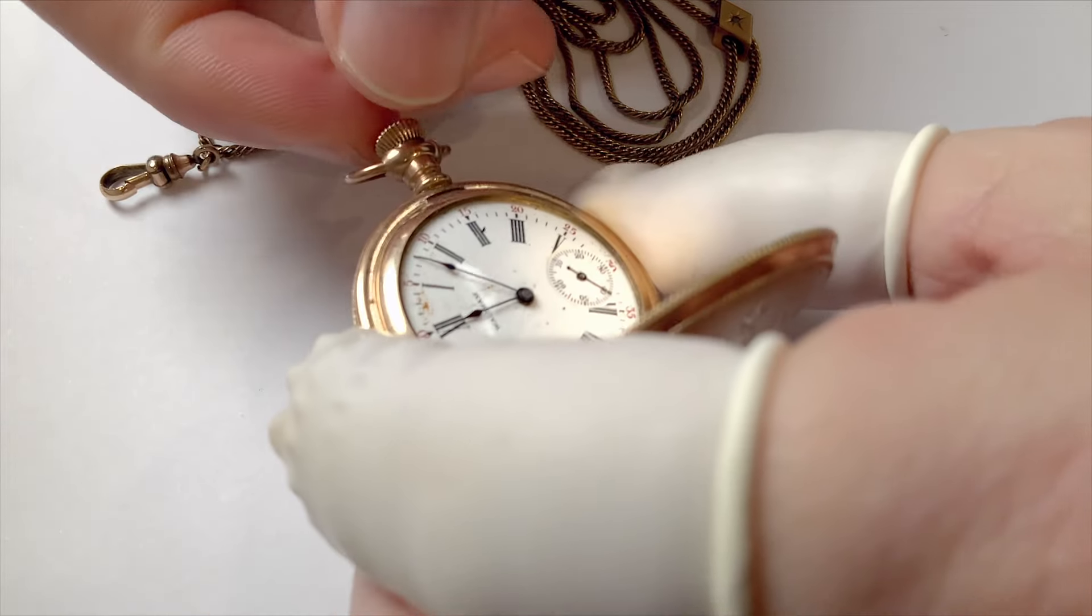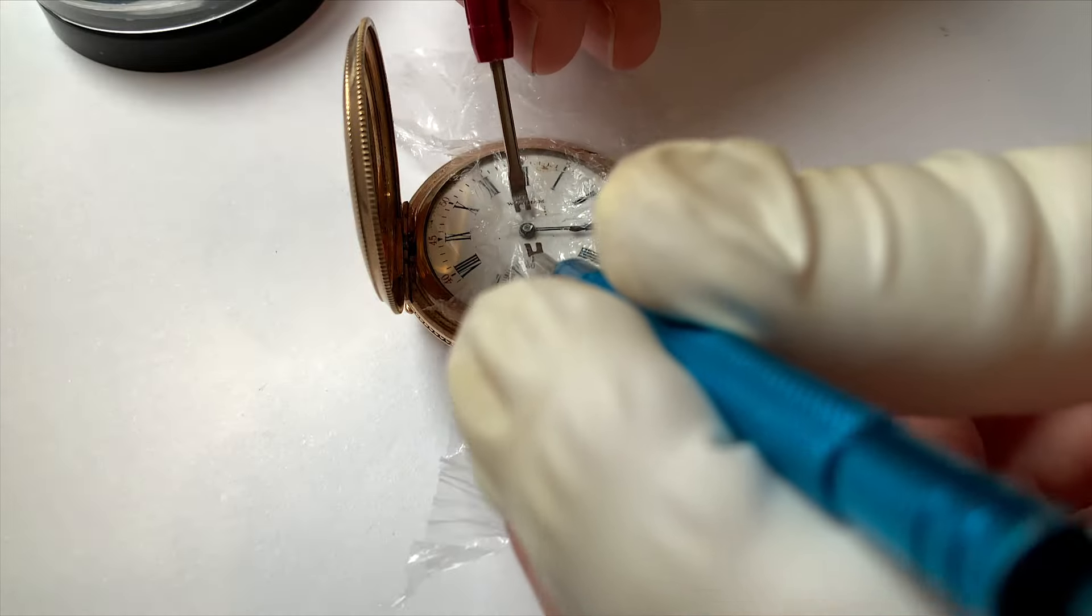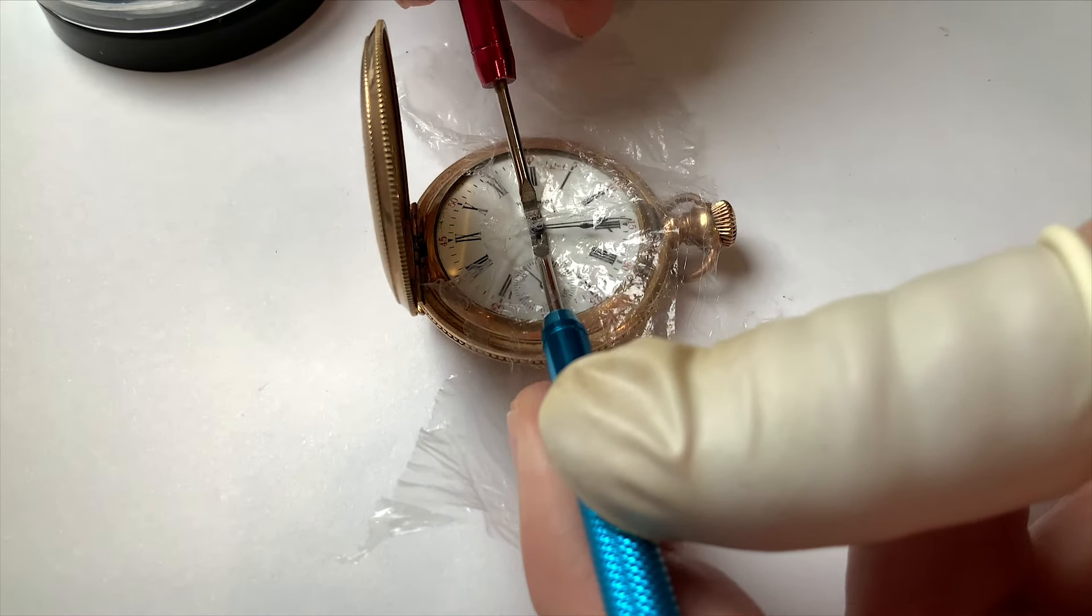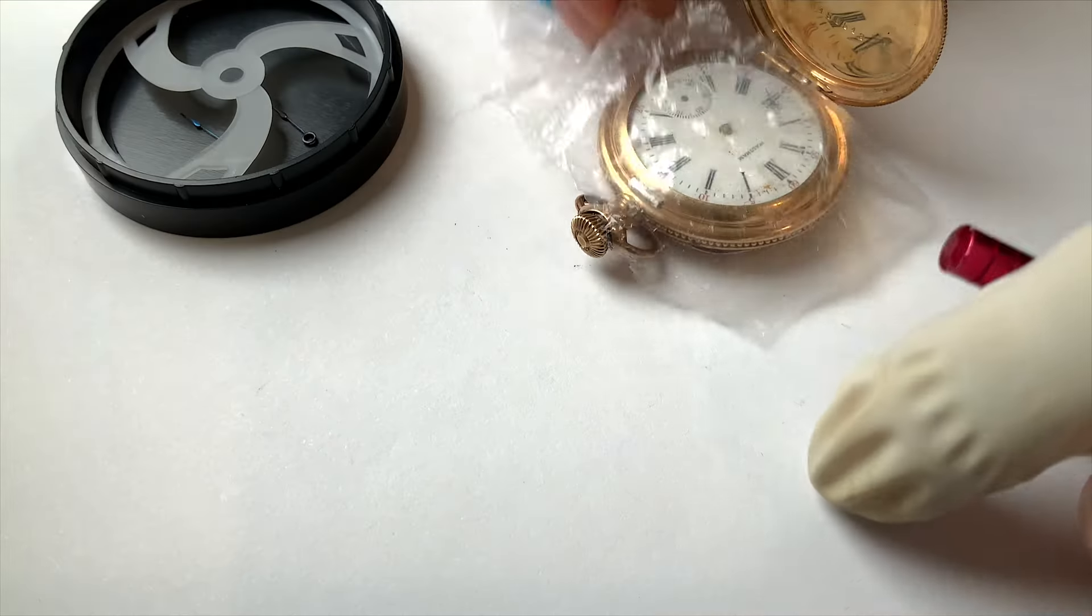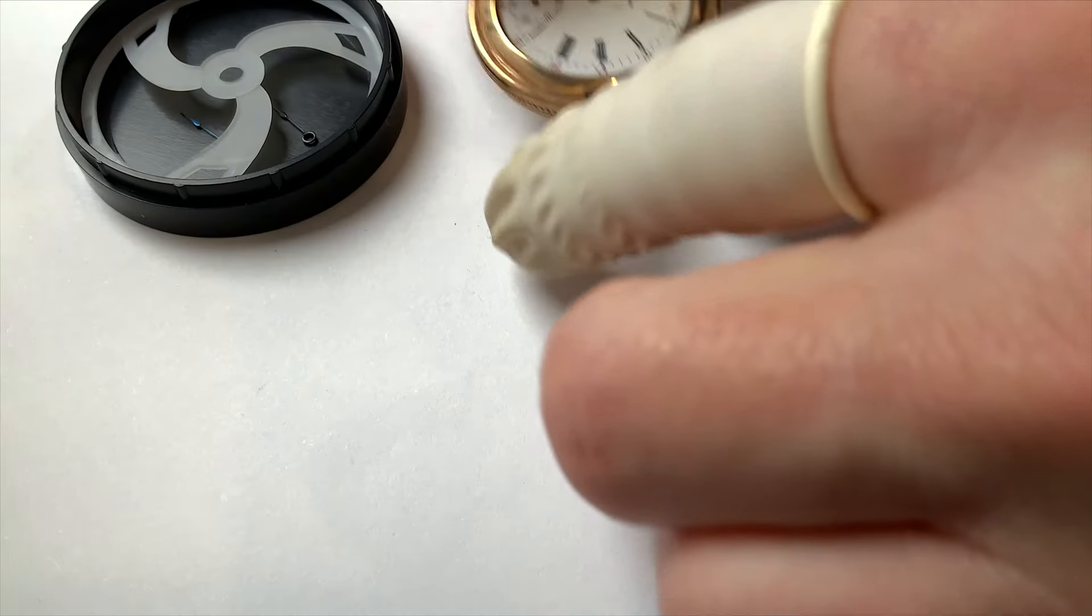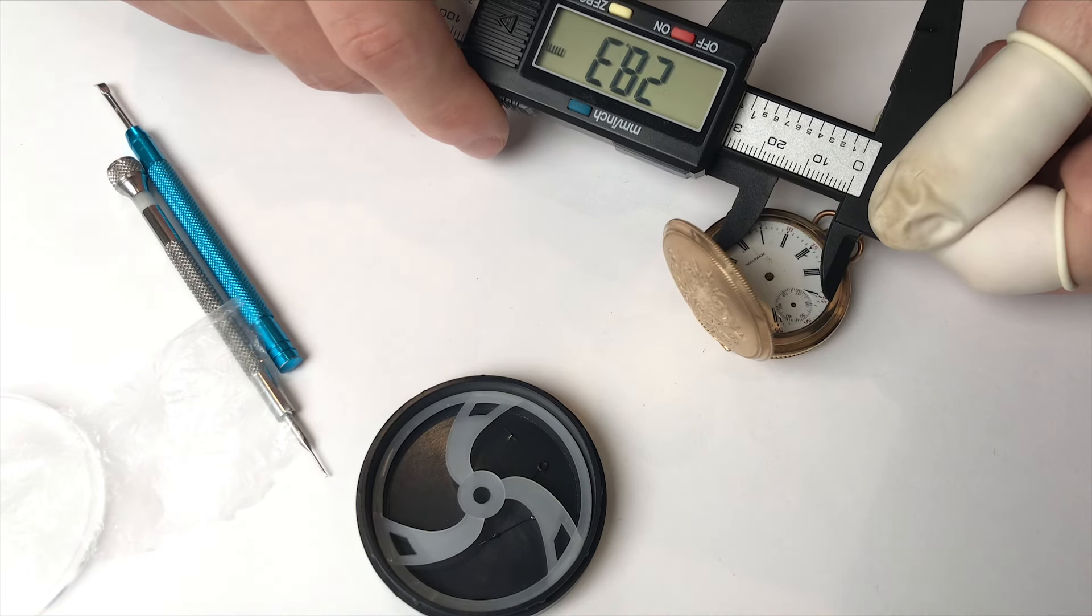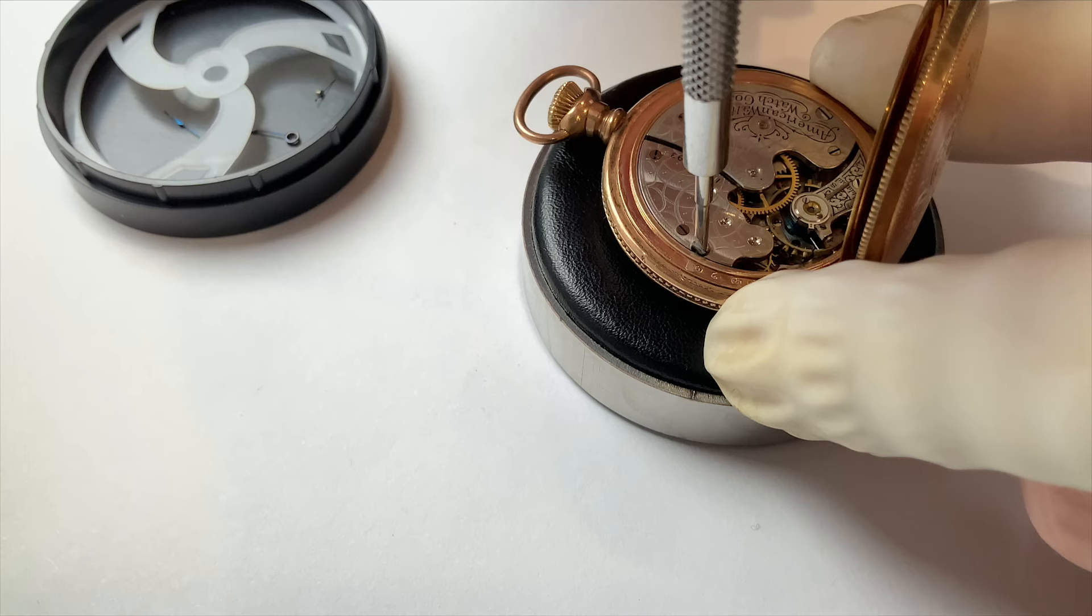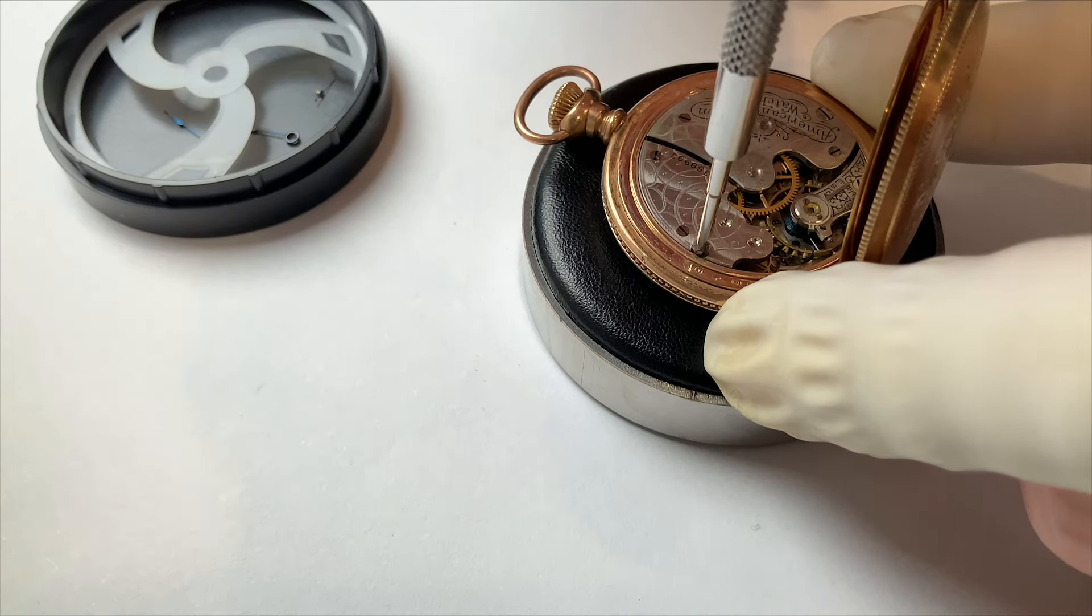Without further delay, let's go ahead and work on disassembling this so we can get it apart and cleaned. We'll pry these hands up gently with these levers. Plastic just as a little precaution to protect the dial. And we'll take a measurement for our replacement crystal. So the movement comes out the front, but first we need to remove these case screws that prevent it from falling out the front.